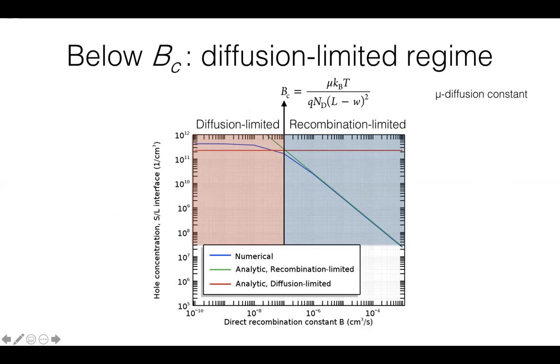This direct recombination critical rate is denoted here. And below when this recombination is smaller, the regime is diffusion limited.